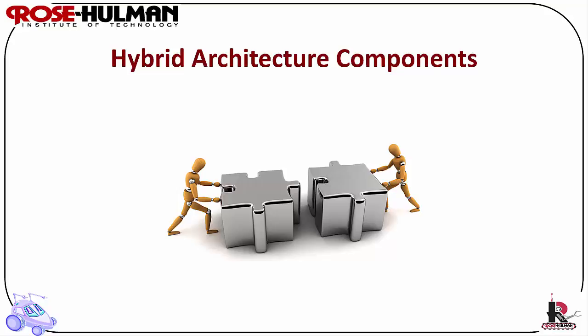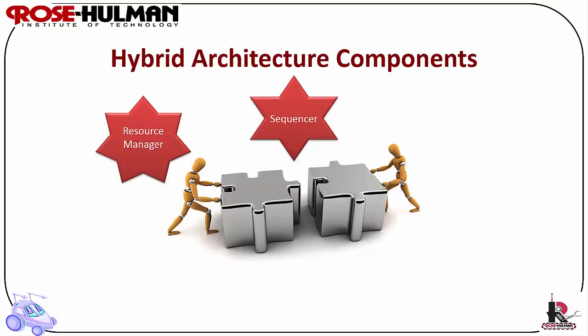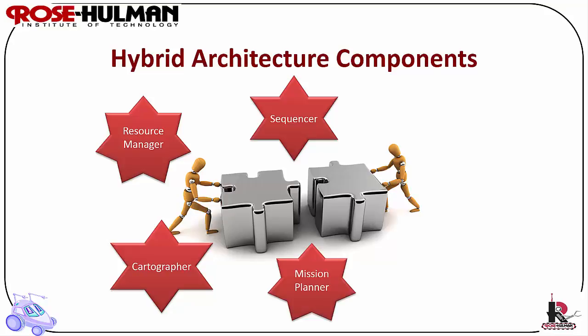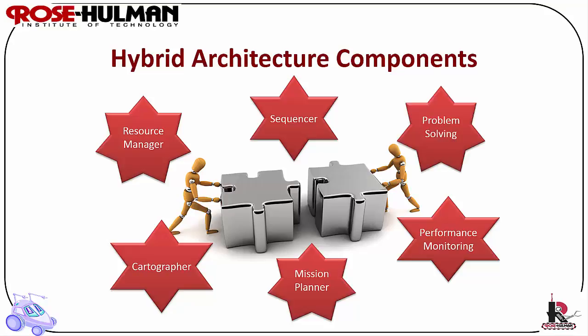Generally, all hybrid architectures have the following components: a sequencer, which generates a set of behaviors to accomplish a subtask; a resource manager, which allocates resources such as sensors to behaviors; a cartographer, which creates, stores, and maintains maps or spatial information; a mission planner, which interacts with humans to create a plan for the robot; performance monitoring, which determines if the robot is making progress and requires robot self-awareness; and problem solving, which searches for a solution when there is a problem.